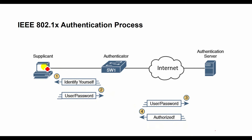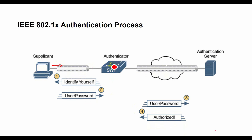The authentication process begins when the client device requests to connect to the network. The authenticator receives the request and creates a virtual port with the supplicant. The authenticator then limits traffic to authentication data sent to the server.